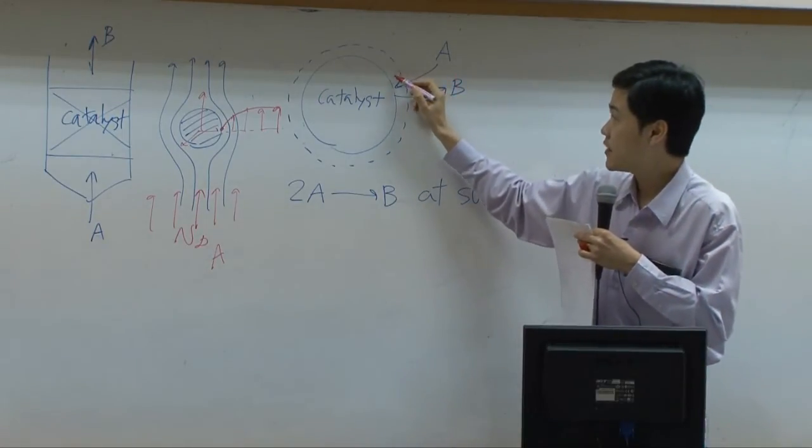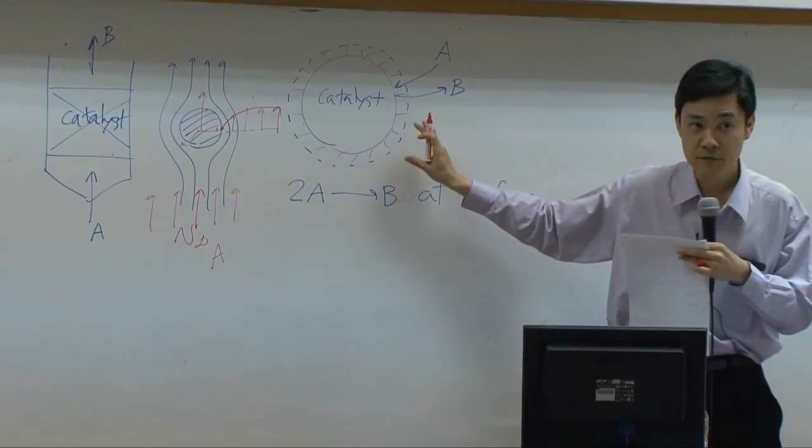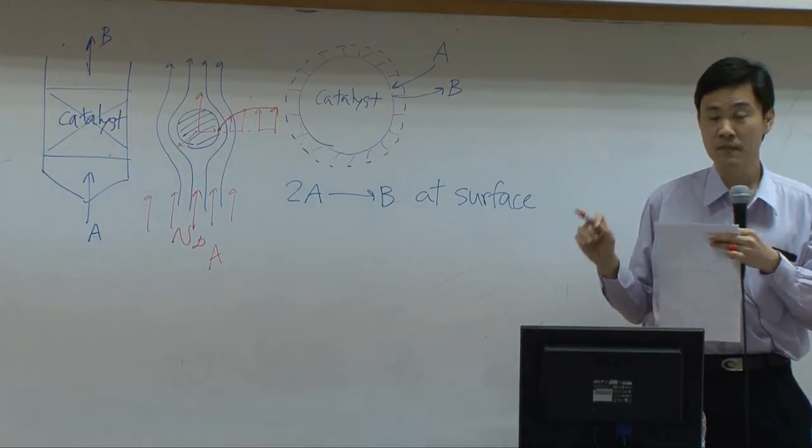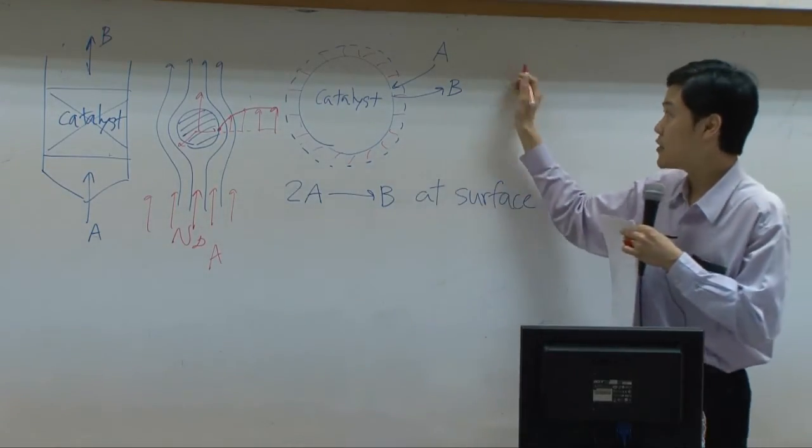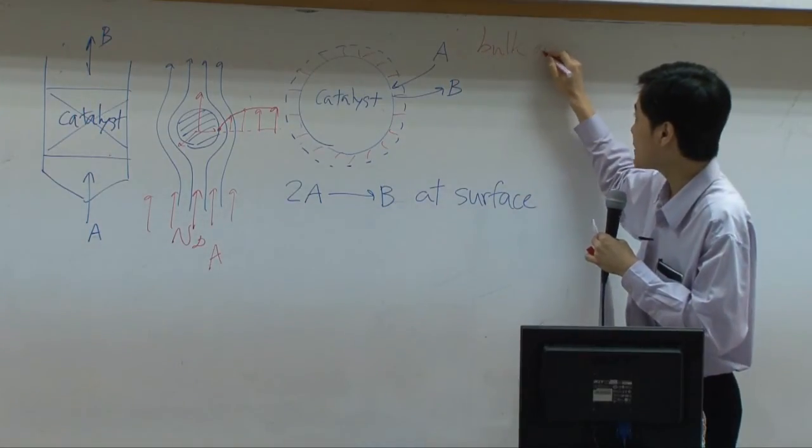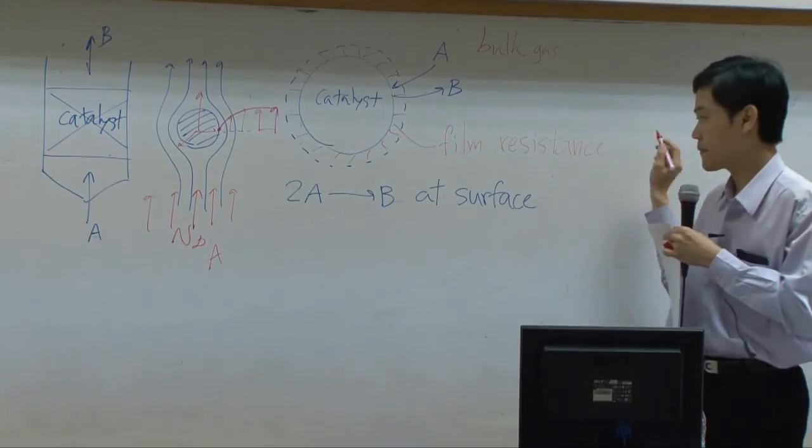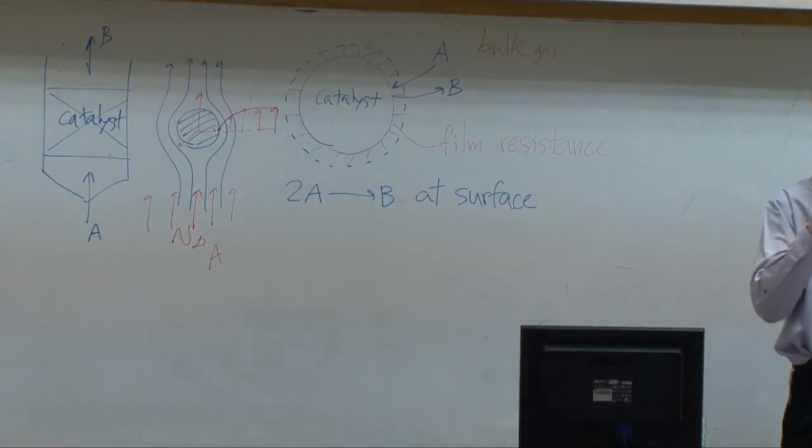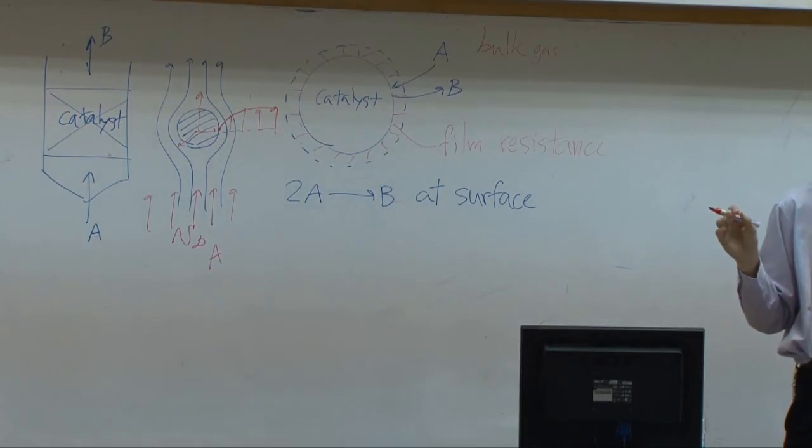In the fluid we have to divide them into two parts. The first part is in here, highlighted in red here. Within this layer there will be a change in concentration of A with respect to position. Outside this layer there will be no change in concentration. So out here we call this one bulk gas. In here we call it film resistance. Just like what we did for Newton's law of cooling. Remember for Newton's law of cooling we also divide the system into two parts. The one with constant temperature is called bulk. The one with temperature change with respect to position is called film resistance. It's the same thing. Same principle.